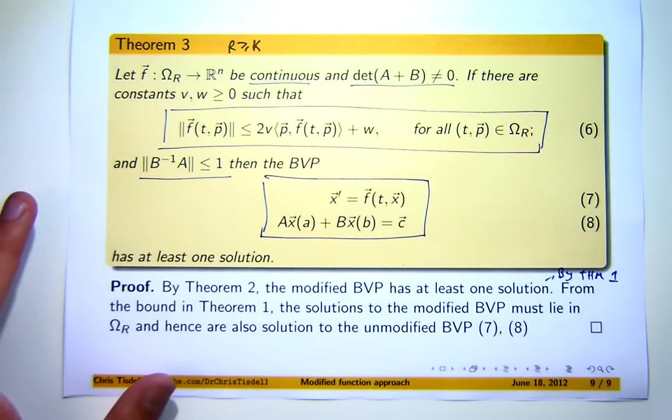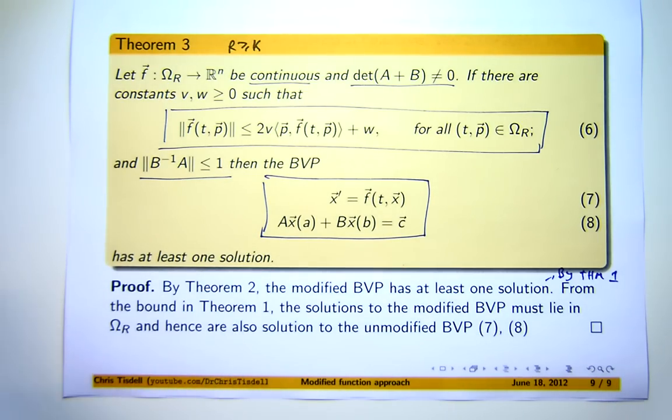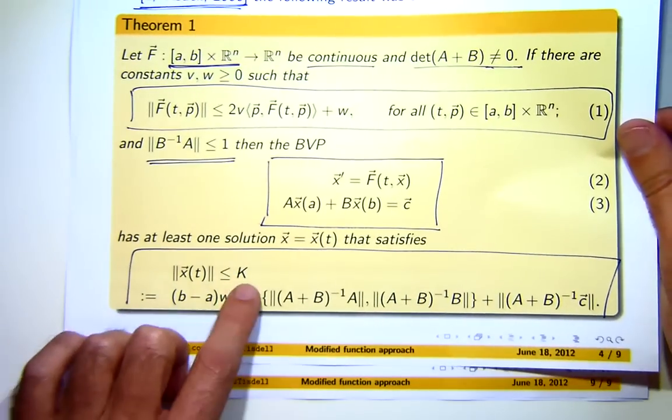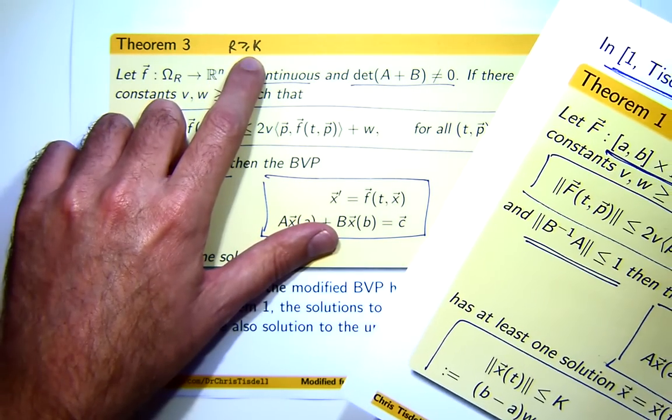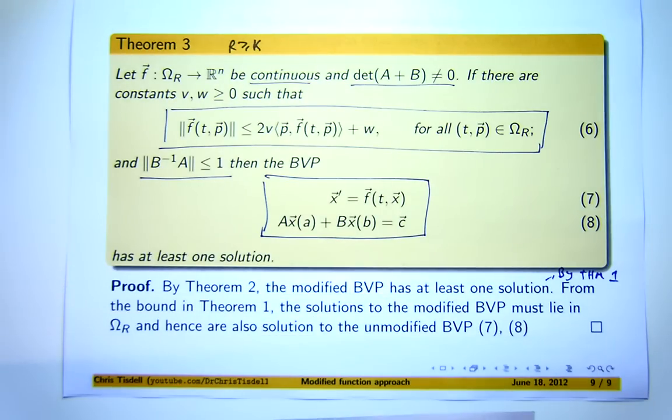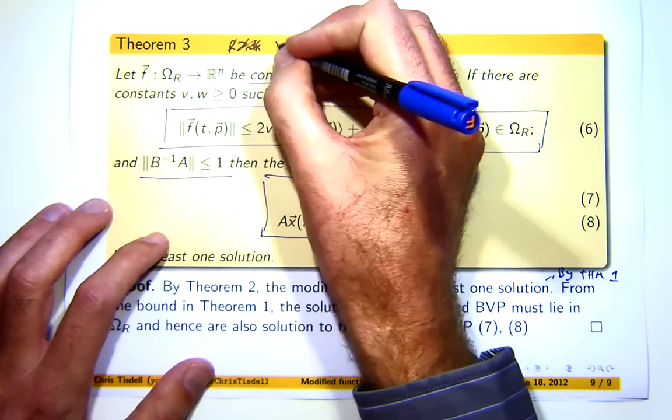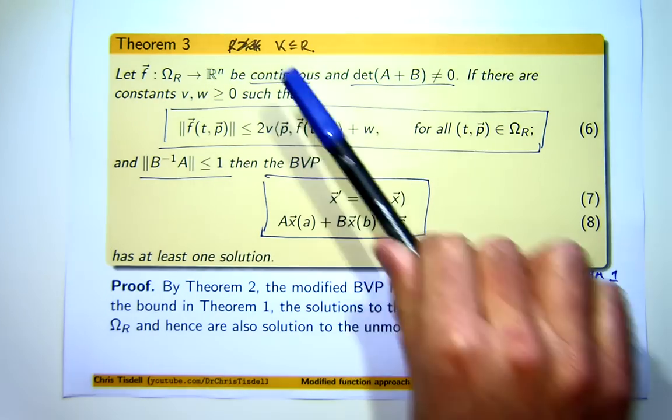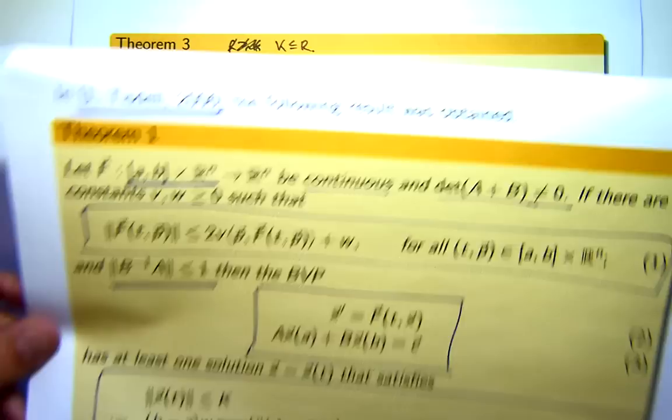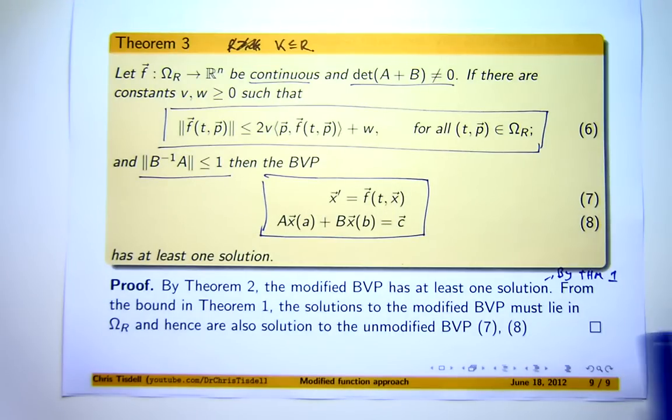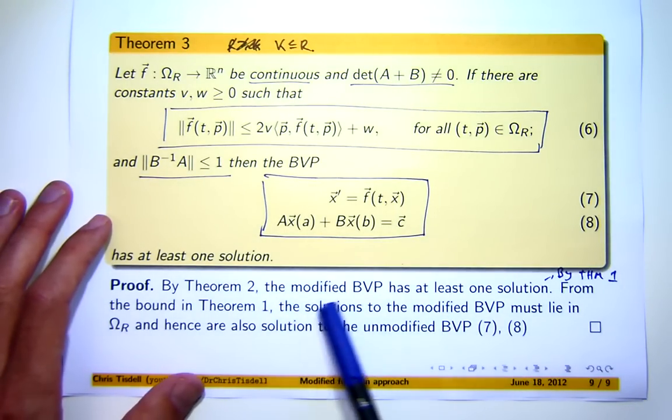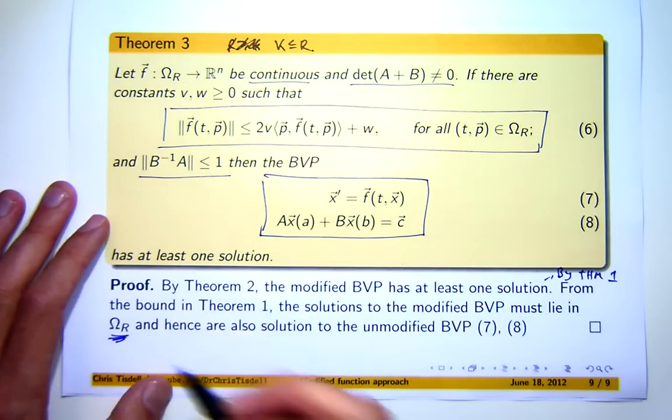Now, in particular, from theorem 1 solution to the modified boundary value problem must also satisfy a bound, this bound here. And because K is less than or equal to R, this means that the solutions to the modified boundary value problem must lie in this set here.